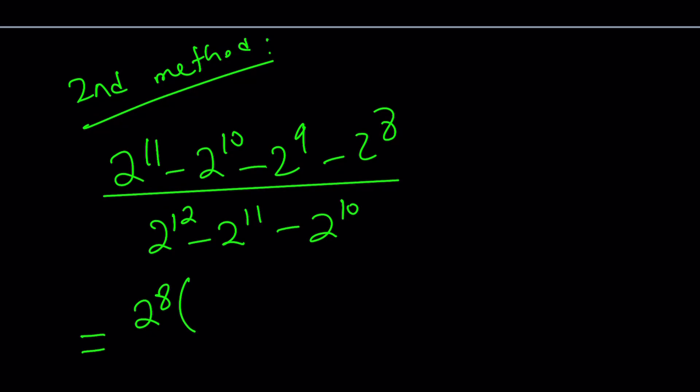And now notice that 2 to the 11th can be written as 2 to the 8th times 2 to the 3rd. So you're basically going to subtract this from all the exponents, like 11 minus 8, and that's going to give you 2 to the 3rd. And then 10 minus 8, that's going to give you 2 to the 2nd. 9 minus 8, which is 2 to the 1st, minus 1. Make sense? When you distribute, you're going to get the original expression.